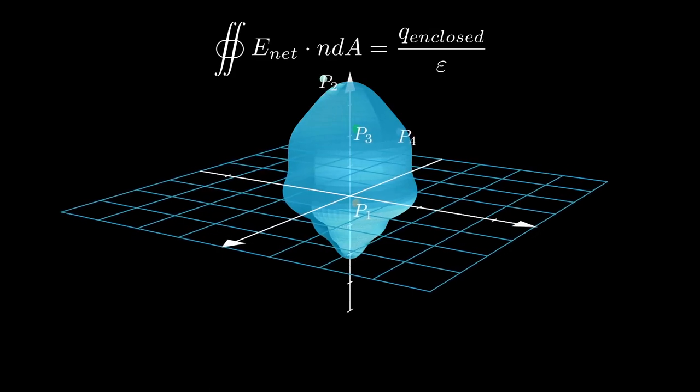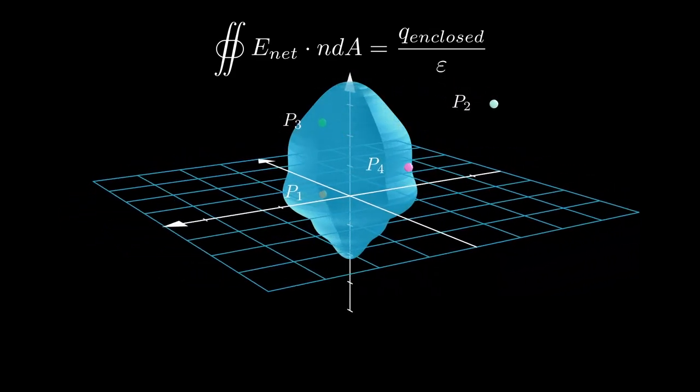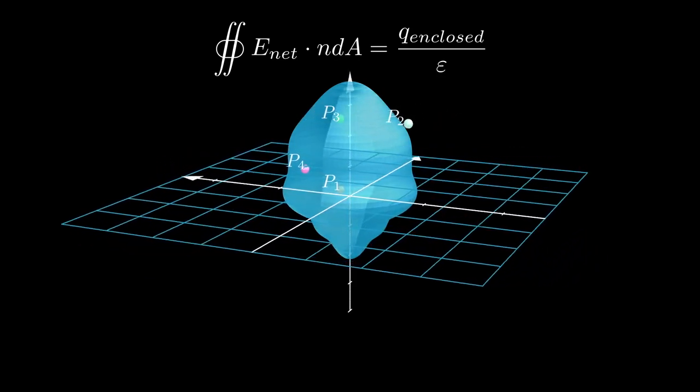Gauss's law in integral form is the equation that the flux of an electric field on a closed surface equals the net charge inside that surface over epsilon-naught.